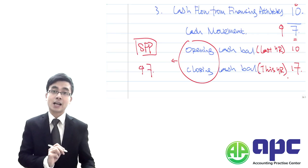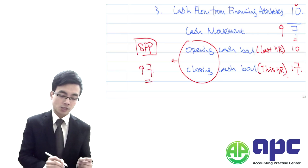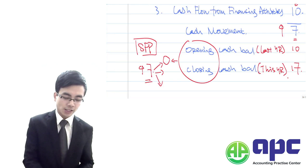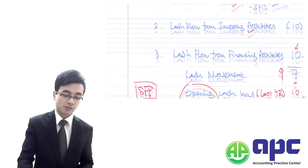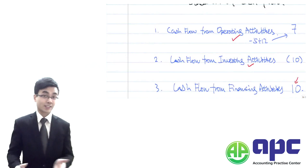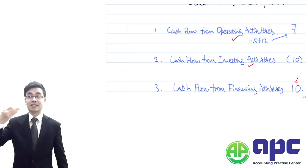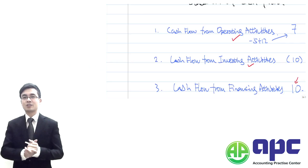So why is this the case? IAS number 7 needs to be split into three elements: operating activities, investing activities, and financing activity. As we have seen here, operating activity is 7 in, investing activity 10 out, financing activity is 10 in, so netting off, that will give you 7.